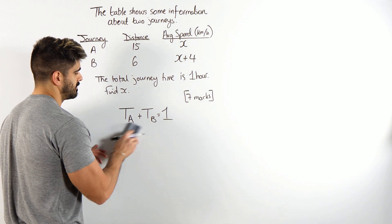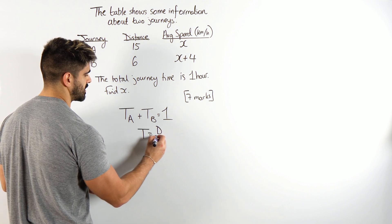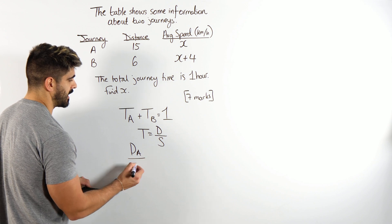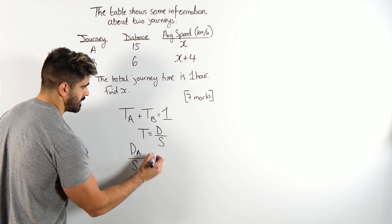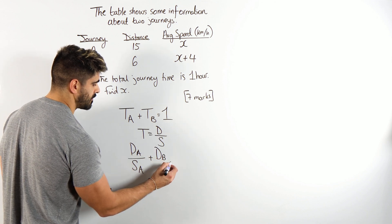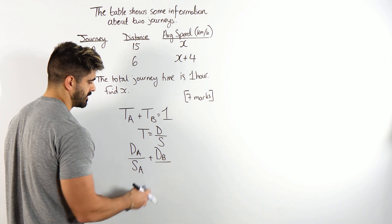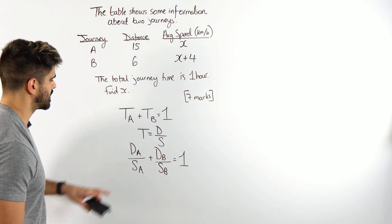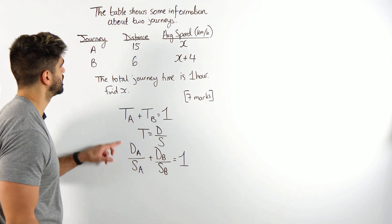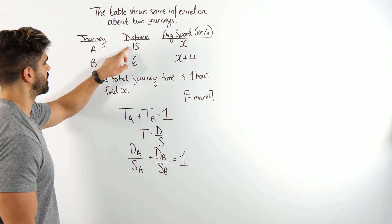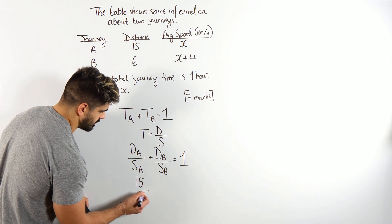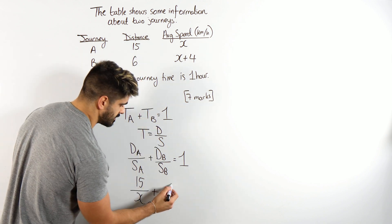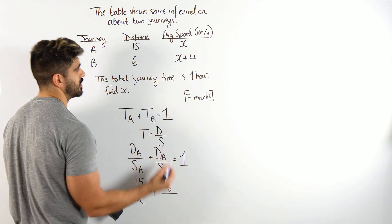Time is distance divided by speed. So the time for A is going to be the distance travelled by A divided by speed of A, plus the distance travelled by B divided by the speed of B, equals 1. The distance travelled by A is 15, so we get 15 divided by the speed of A, x, plus the distance travelled by B is 6, divided by the speed of B, which was x plus 4.